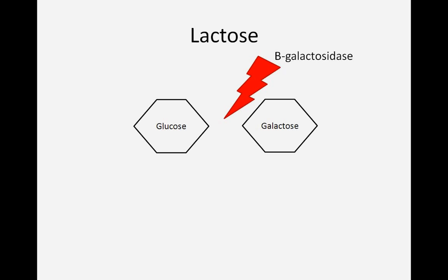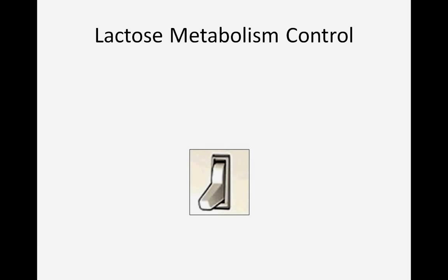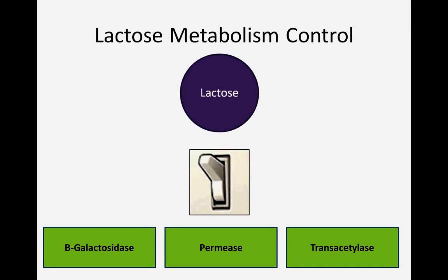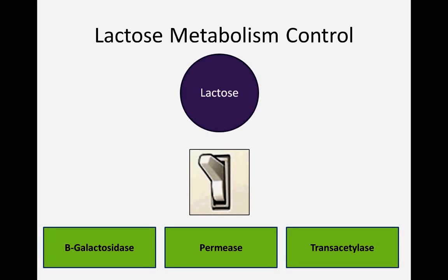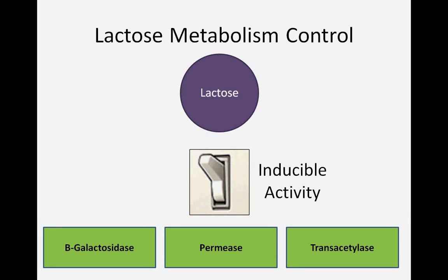Therefore, the lac operon is only turned on under specific conditions. Beta-galactosidase and two associated genes, permease and transacetylase, are only transcribed when lactose is present. Because the lac operon is off by default and turned on only in particular circumstances, the lac operon is said to be inducible.